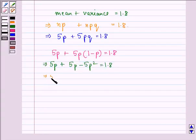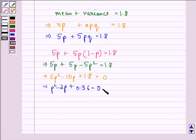This implies 5P squared minus 10P plus 1.8 is equal to 0. This implies P squared minus 2P plus 0.36 is equal to 0. This we get by dividing throughout by 5.